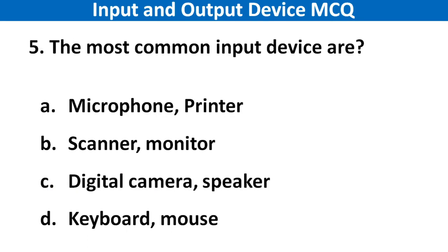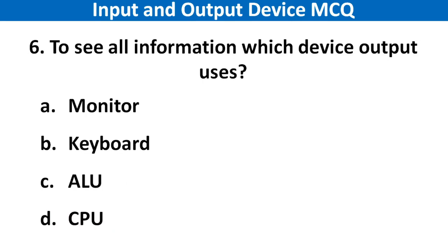Next question: The most common input devices are. Right answer is option D: Keyboard and mouse. Next question: To see all information, which output device is used? Right answer is option B: Keyboard.